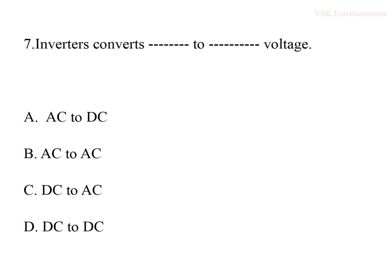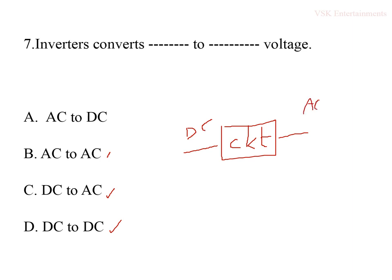The seventh question: inverters convert dash to dash voltage. Options are AC-to-DC, AC-to-AC, DC-to-AC, and DC-to-DC. An inverter is a circuit which converts DC voltage to AC voltage — input is DC and output is AC. So option C is the correct answer.